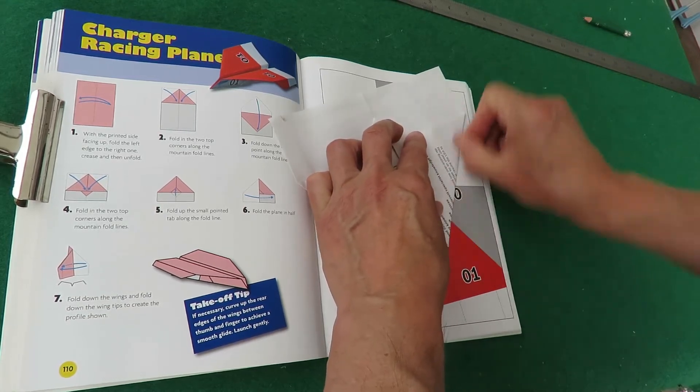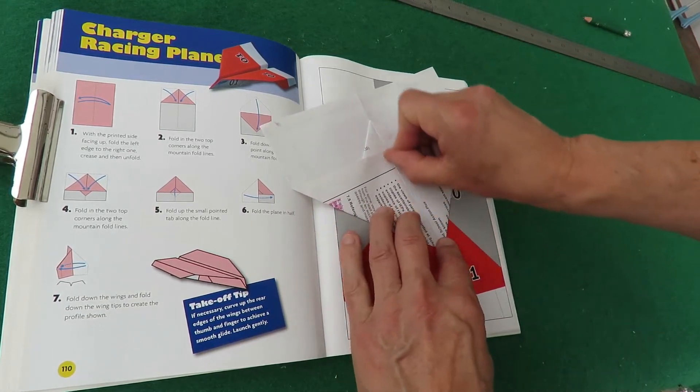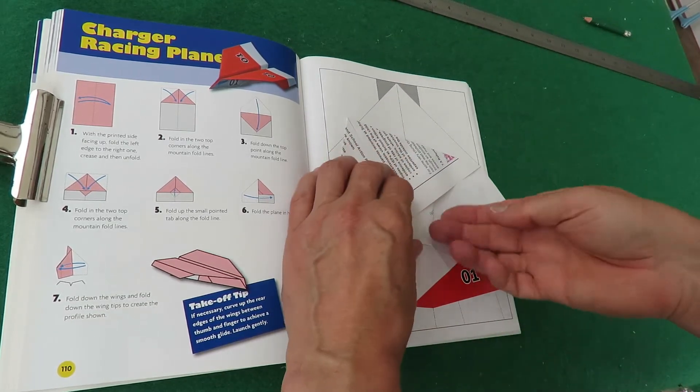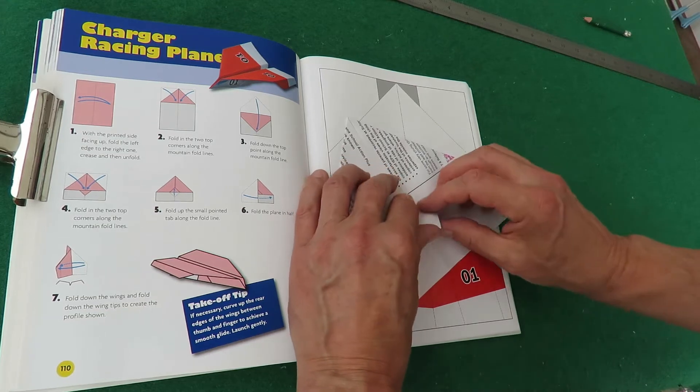Did I say that? I don't remember I did. Anyway, this is the Charger Racing Plane. Done that, and then that bit that's sticking out at the bottom there, fold over.